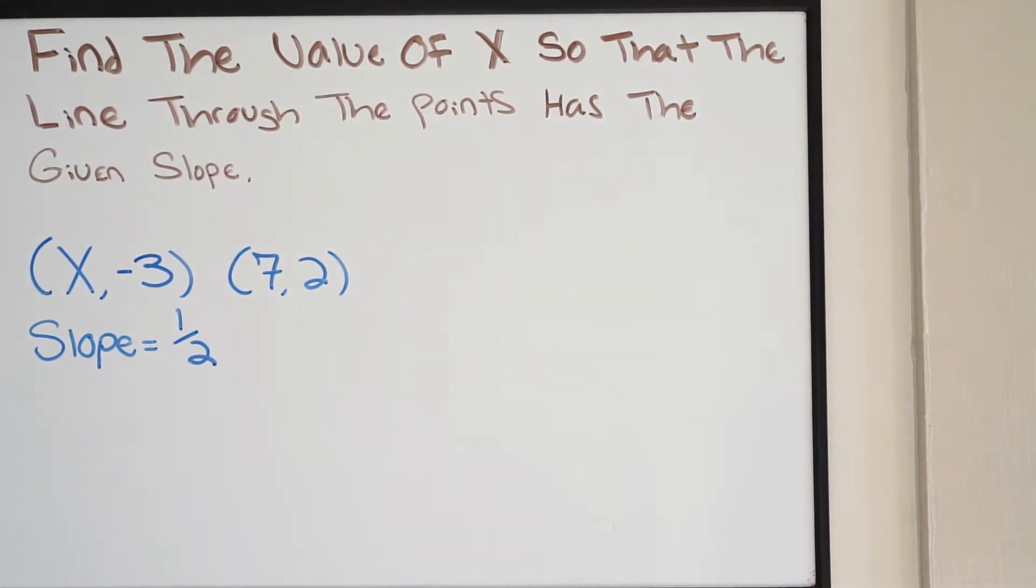Notice here that we're provided the slope, which is going to be a half, and then we're provided these two points in which this line passes through. However, notice that we're missing the x value of this point. So that's what they want us to find. They want us to find the x value of this point so that the line will have this given slope.